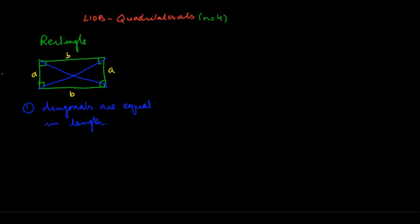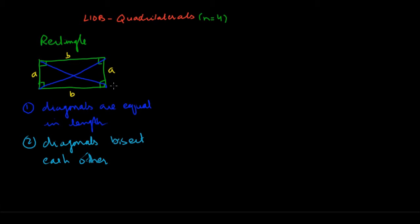The second property is that diagonals bisect each other. Bisection means that the diagonals divide each other into equal parts. So this part of one diagonal and this part of one diagonal — if I go from here to here and here to here — these line segments would be equal in length. Similarly, this segment and this segment would be equal in length. That's what is meant by bisection of diagonals.